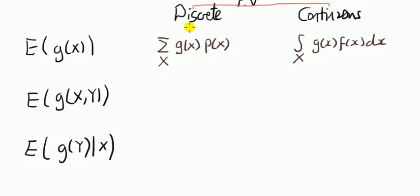Okay, so I've got a table here. We have random variables, discrete, continuous and we've got here the first line says the expectation and g is a function of x. So this is saying what is the expected value of a function of x.